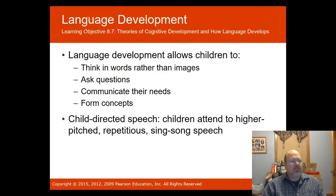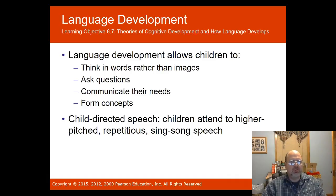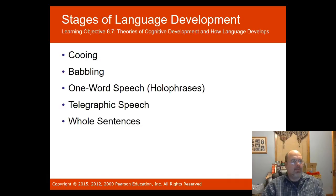Language development allows children to think in words rather than images, encourages them to ask questions, communicate their needs, and form concepts. Children attend to child-directed speech — higher-pitched, repetitious, sing-song speech. The different levels of language development are: cooing, babbling, one-word speech, telegraphic speech, and whole sentences.